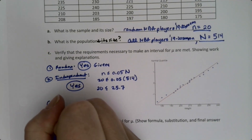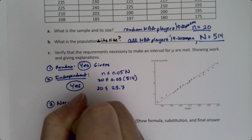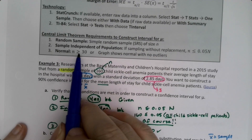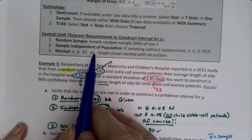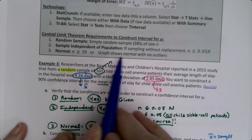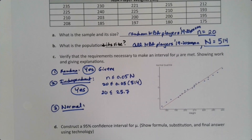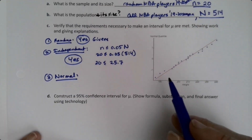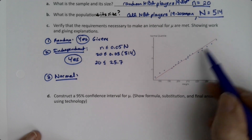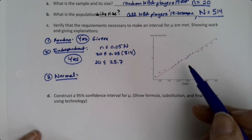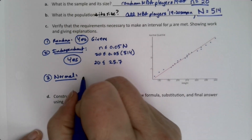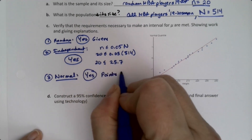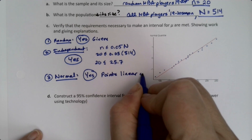For normality, we want either a sample size bigger than 30 — which we don't have — or we can use a graph. This is the normal probability plot we learned about in section 7.3. The points are linear with no outliers, so the answer is yes.